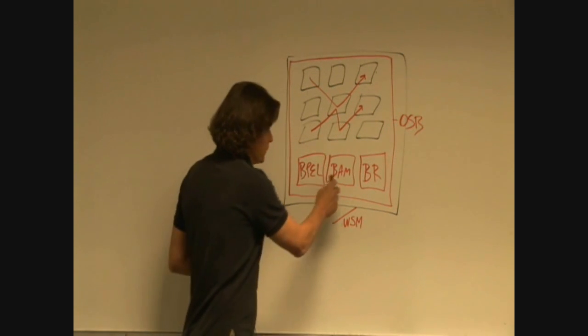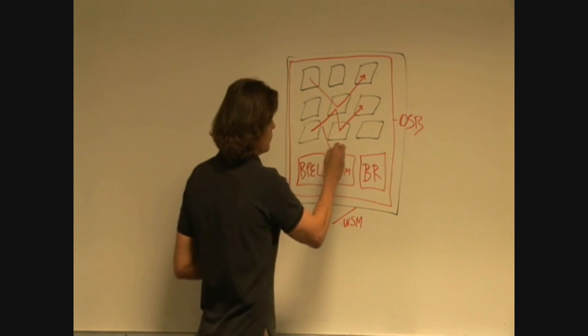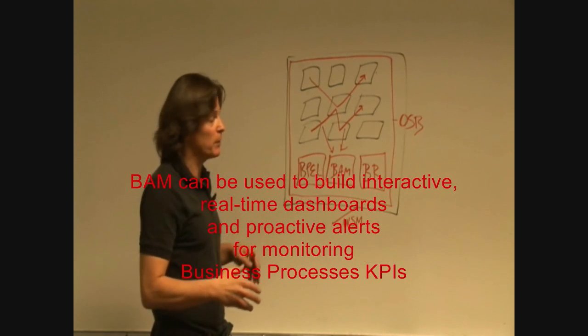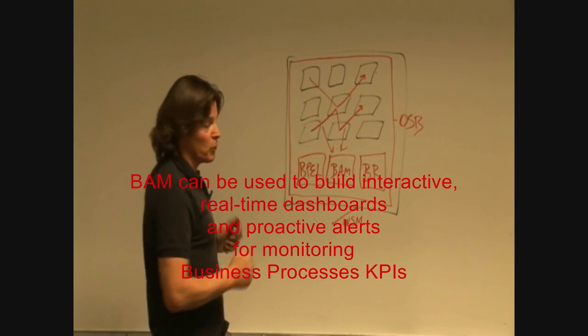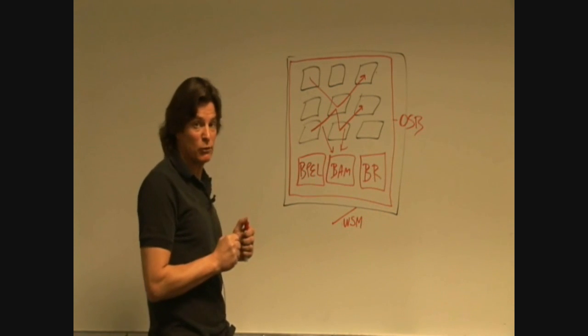You also have business activity monitoring. So all these processes report events to BAM. So then later, you can have a nice GUI that C-level people or operations can see how the processes are going real time. So you have visibility into all this.